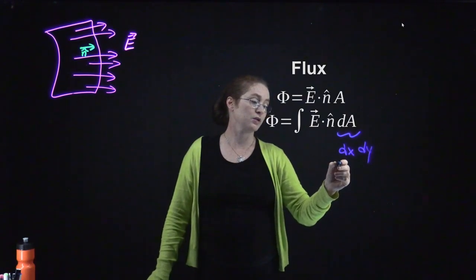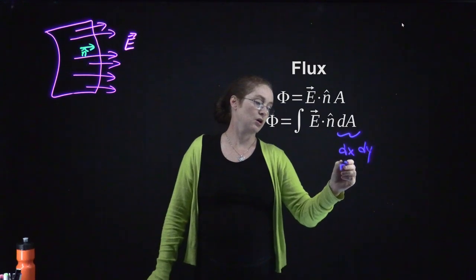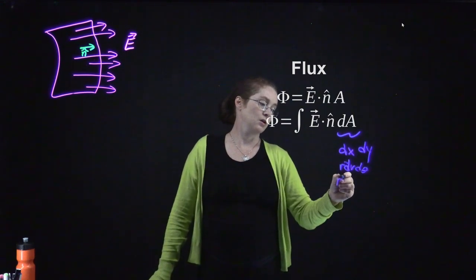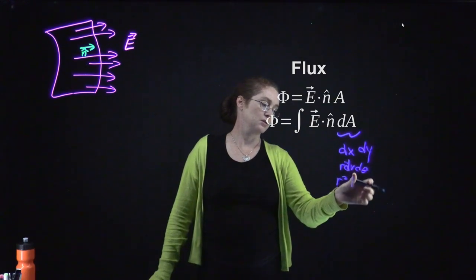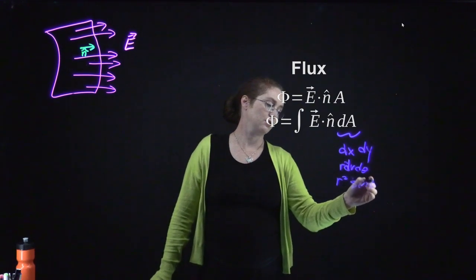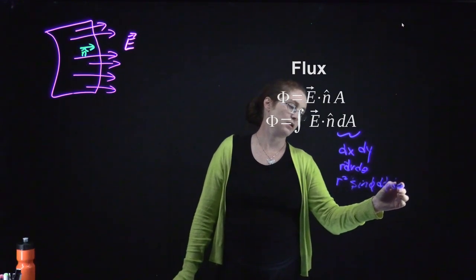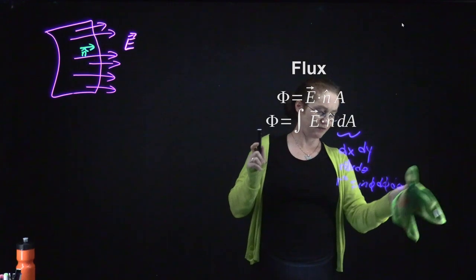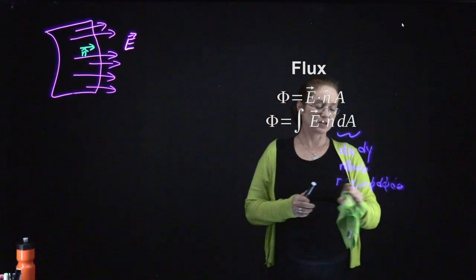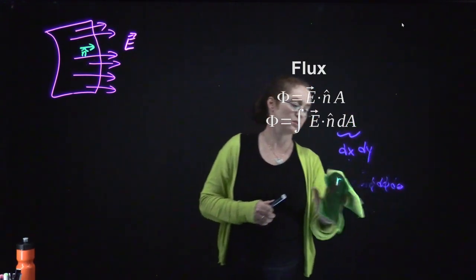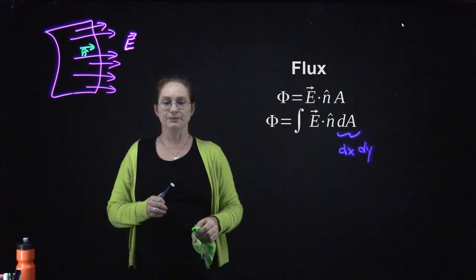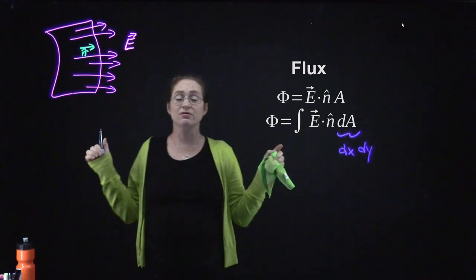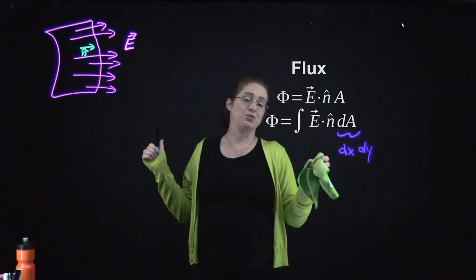In spherical polar coordinates, the area element is R² sin φ dφ dθ. The area also depends on what type of surface you have. There will be times when it is convenient to use spherical polar or cylindrical coordinates rather than Cartesian, depending on the geometry of the problem.